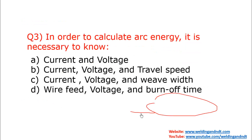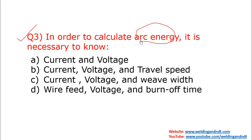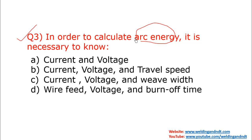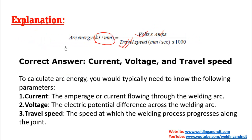Question number three: in order to calculate arc energy, it is necessary to know what? The formula for arc energy — unit is kilojoules per mm — is volts multiplied by amps, divided by travel speed. So you need three parameters: voltage, amperes, and travel speed. Option B is the correct answer: current, voltage, and travel speed. Current is the amperes flowing through the welding arc, voltage is the potential difference, and travel speed is the speed at which the welding progresses along the joint.